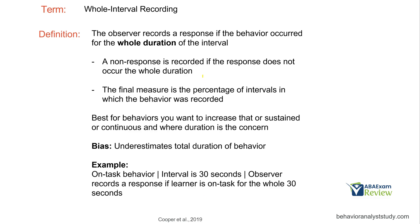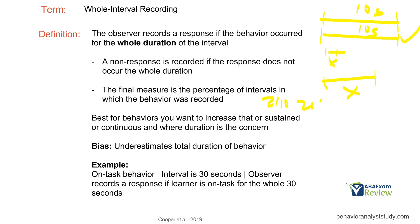Whole interval recording: a response is recorded if the behavior occurred for the whole duration of the interval. With a 10-second interval, the behavior has to occur the entire 10 seconds — anything less does not count. A non-response is recorded if it does not occur the whole duration. The final measure is the percentage of intervals in which behavior was recorded; 2 out of 10 would be 20%. The bias here is that it underestimates total duration of behavior.